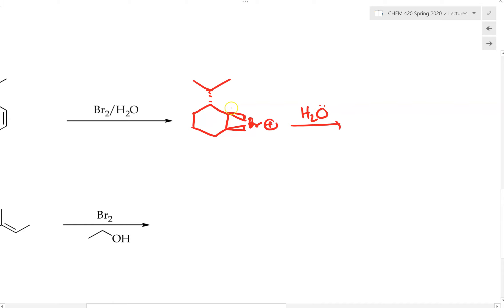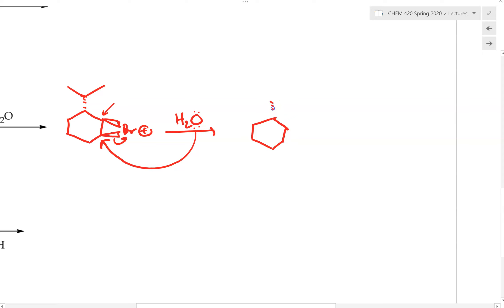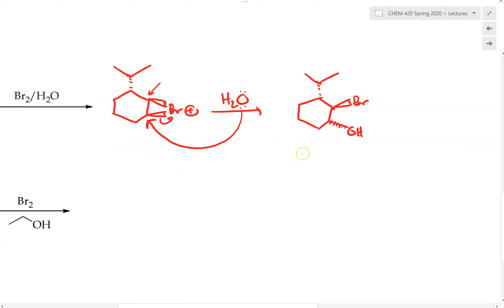Water can attack either carbon, and both carbons are equally substituted, so substitution alone doesn't provide selectivity. However, water must attack from the back side, and the back side of one carbon is more sterically hindered than the other. Therefore, water attacks from the less hindered back side, breaking the ring. The product has water added from the back with bromine pointing up. This will be the major product — we will not produce an equal amount of the other enantiomer.